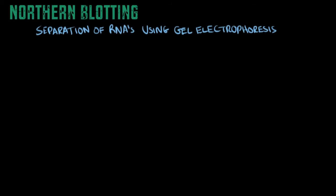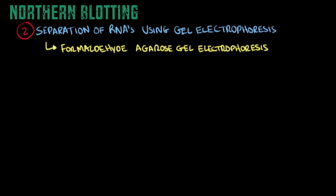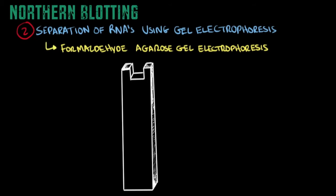Once we extract the RNA mixture from those cells, the next step is to separate the RNA molecules using gel electrophoresis. The specific type used to separate RNA molecules is known as formaldehyde agarose gel electrophoresis. What I have here is a simple illustration to help you understand how this works. We have a simple gel, and the first thing I'm going to do is pipette here the mixture containing all those RNA molecules.